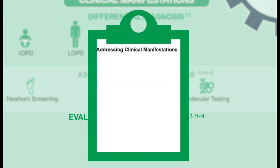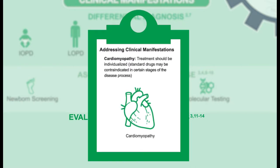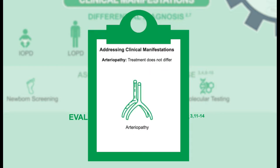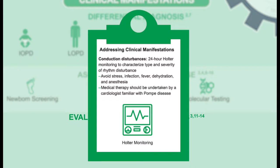Some clinical manifestations include cardiomyopathy, and medical intervention for cardiomyopathy needs to be individualized because some standard drugs used can be contraindicated at certain stages of the disease process. There have also been case reports of arteriopathies in these patients, though treatment does not differ from the general population. Some patients can have conduction disturbances, and 24-hour Holter monitoring is useful to characterize the type and severity of rhythm disturbance.